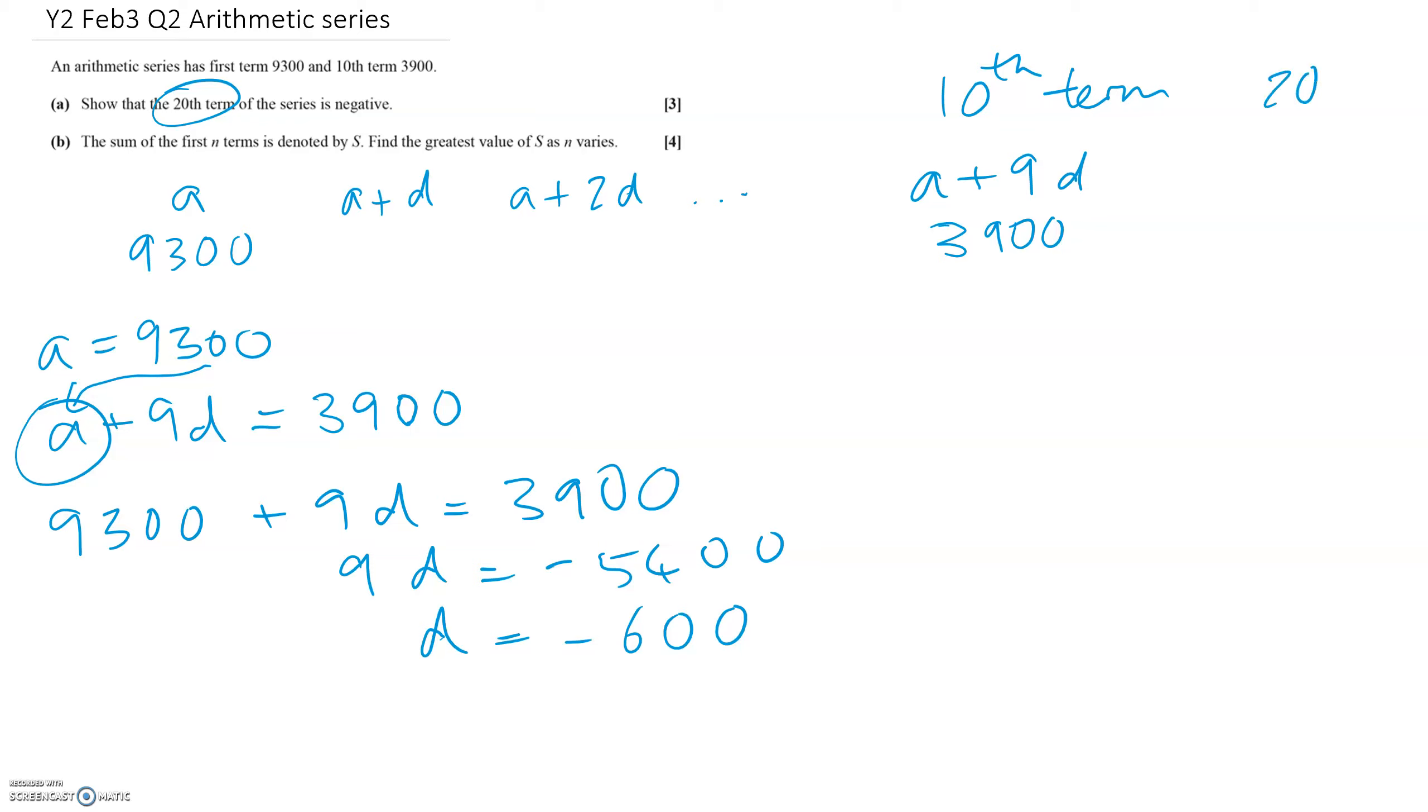So if you want to find the twentieth term, that's going to be a plus 19d. So term 20 is a plus 19d, which is 9300 plus 19 times by minus 600. And let's type that into calculator, plus 9300. And I got minus 2100.